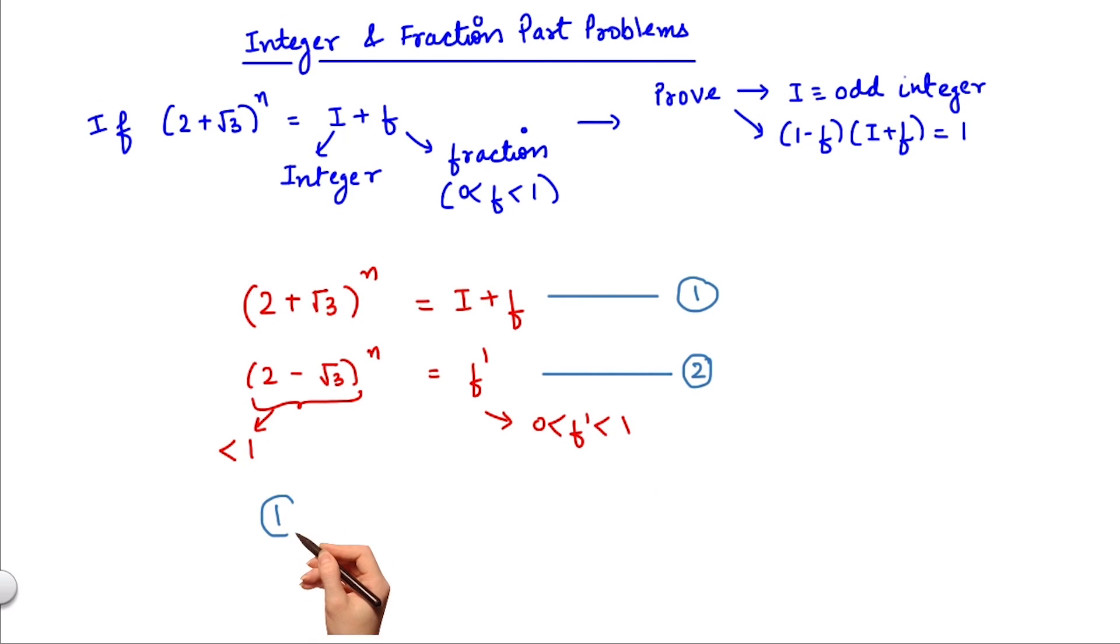As the next step, let's add 1 and 2 to get i plus f plus f dash equals 2 plus root 3 whole to the power n plus 2 minus root 3 whole to the power n.